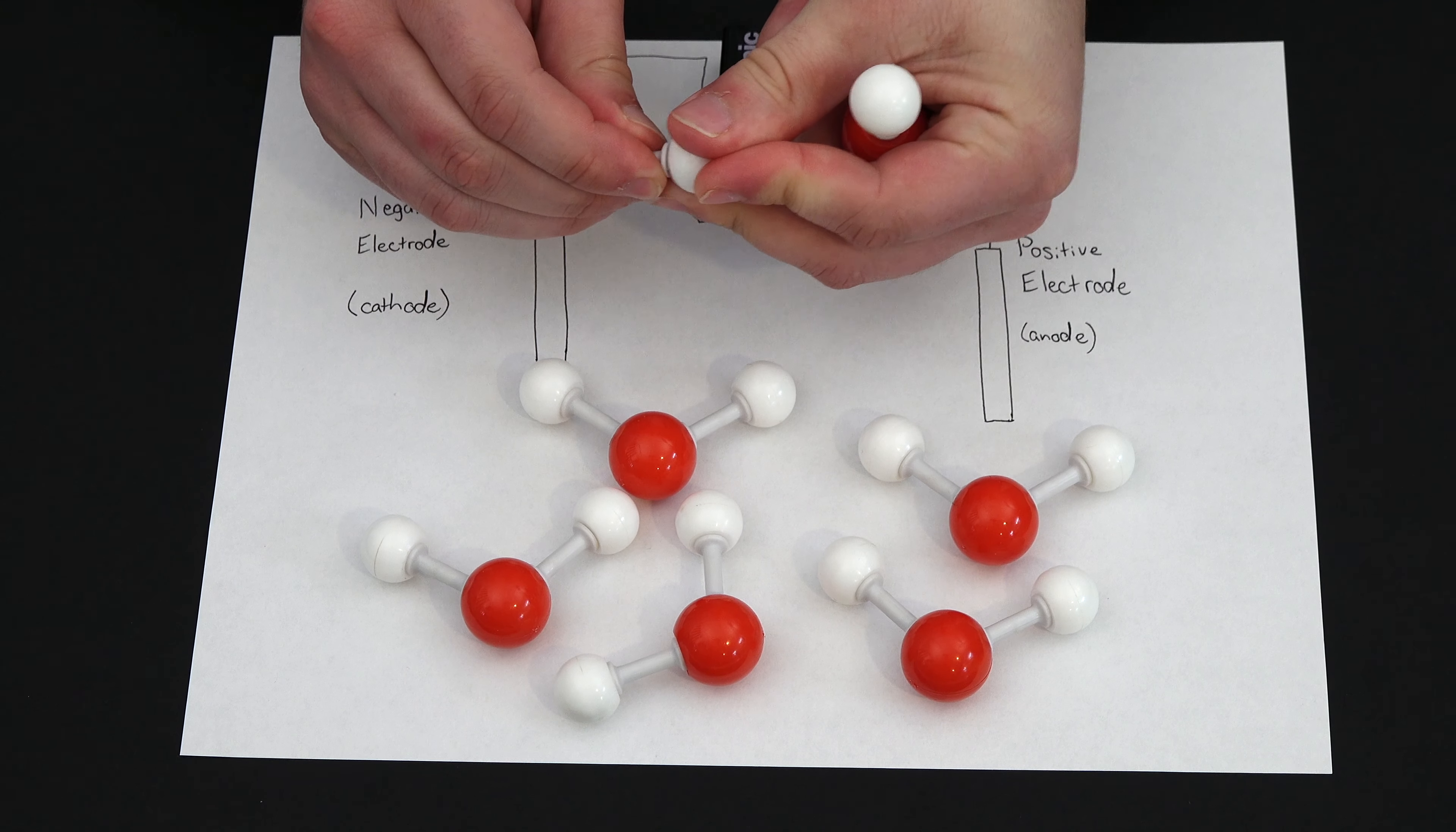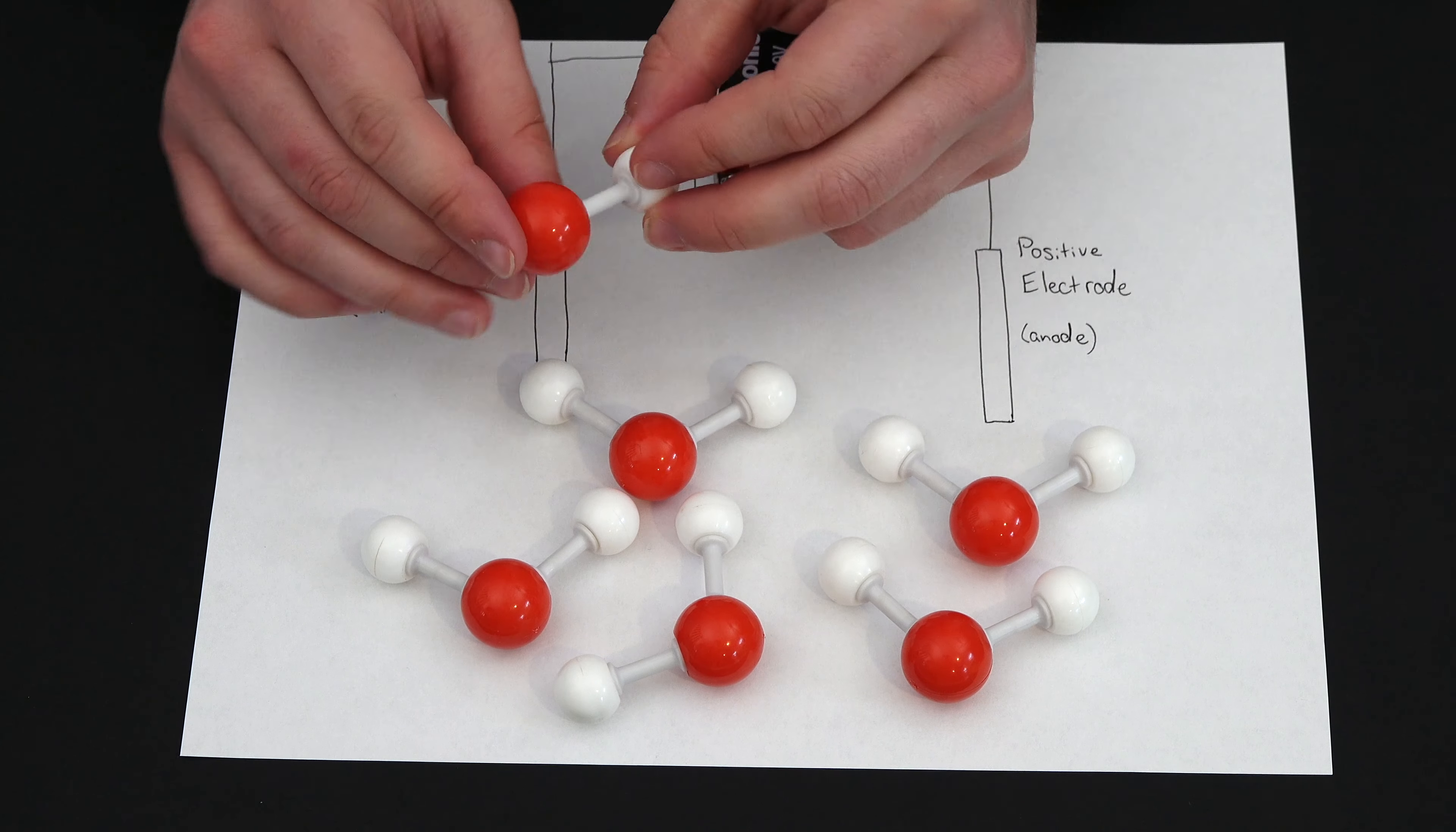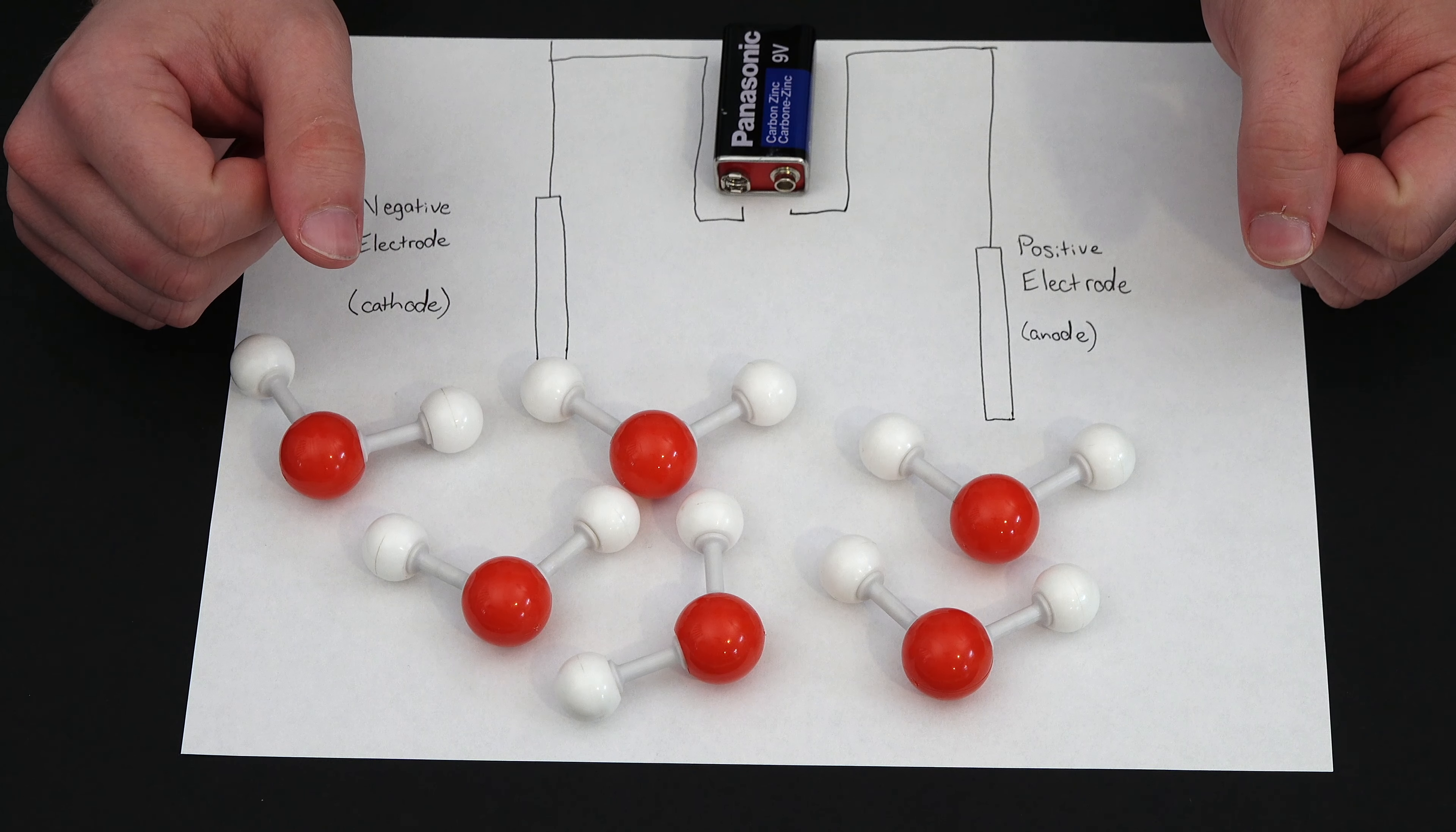And this connection between the two is going to be representing a pair of electrons. So in a water molecule, one electron from an oxygen atom, one electron from a hydrogen pair up, and that is how they bond together.